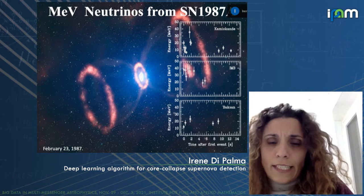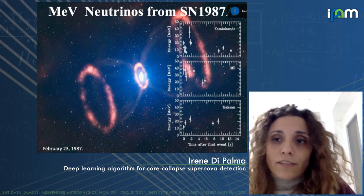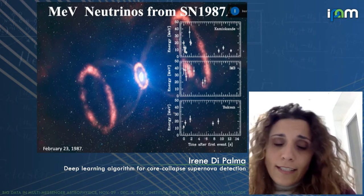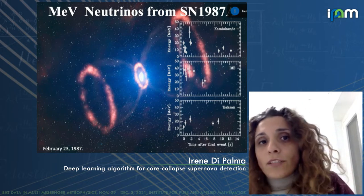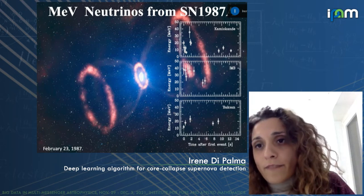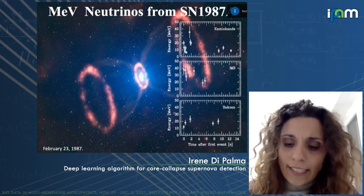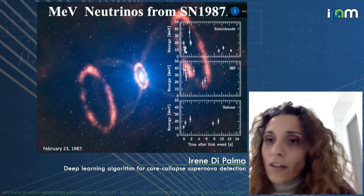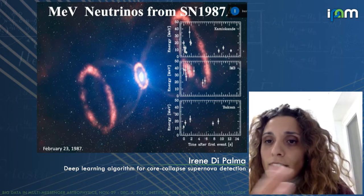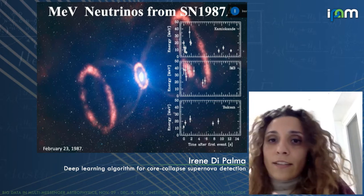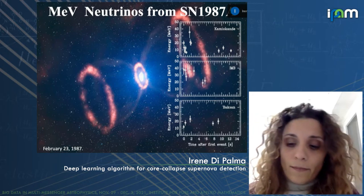It's really important to detect different probes for the same source. What we want to detect is the MeV neutrino signal and the gravitational waves. They are both produced in the innermost region of the collapsing star, so they can give us information about the dynamics of the source, the nuclear equation of state, and the rotational state of the star.